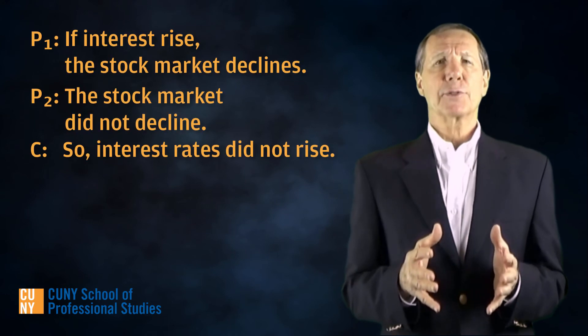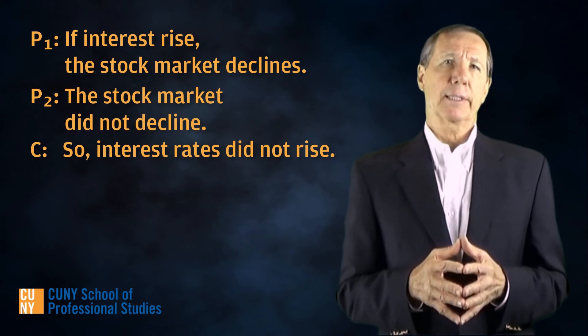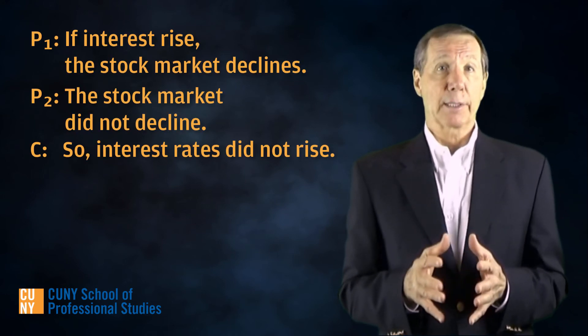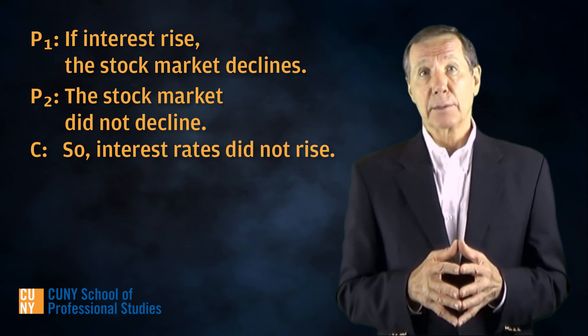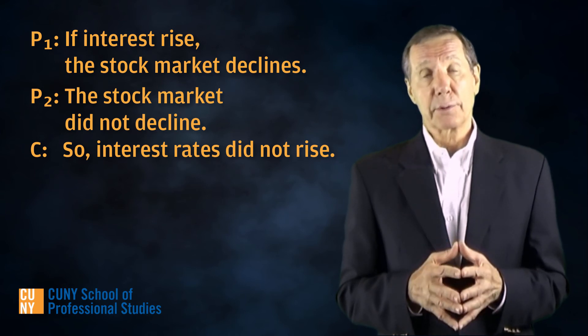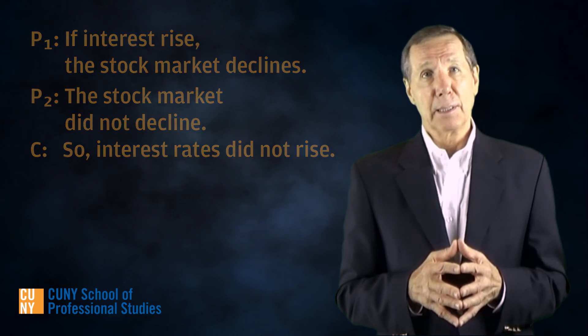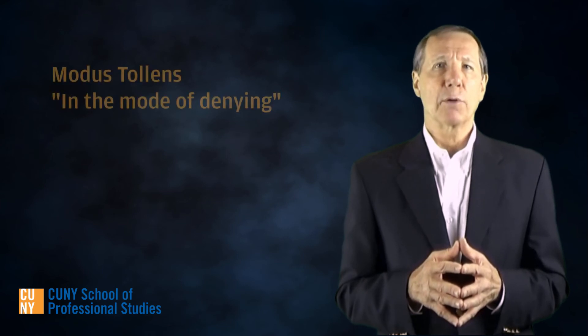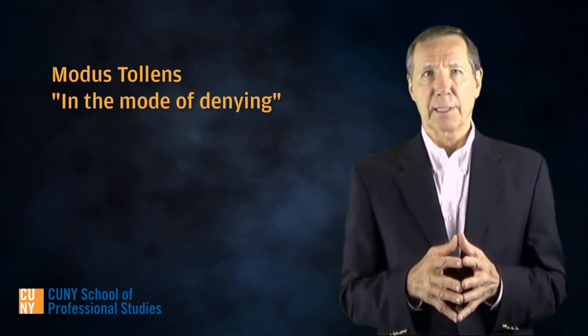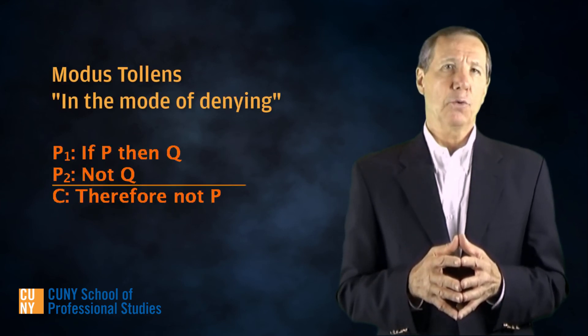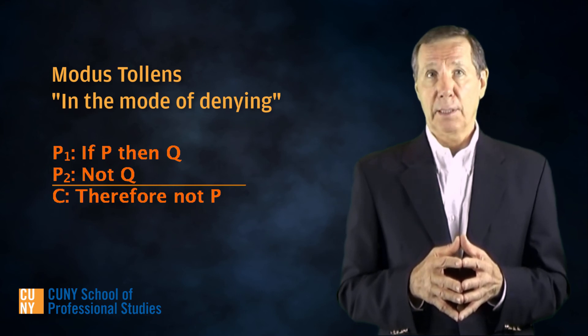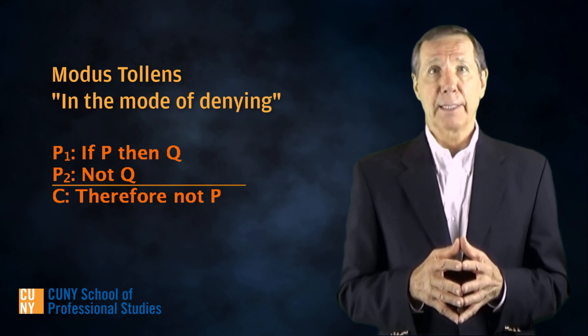Here's one more. If interest rates rise, then the stock market declines. The stock market did not decline, so interest rates did not rise. This argument is an instance of a deductive argument form known as modus tollens. It looks like this: If P, then Q. Not Q. Therefore, not P.